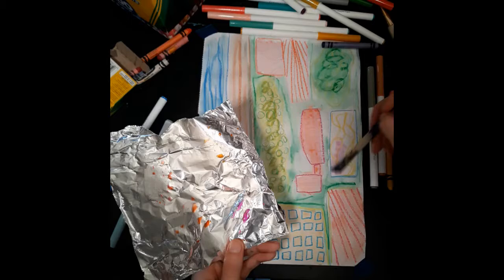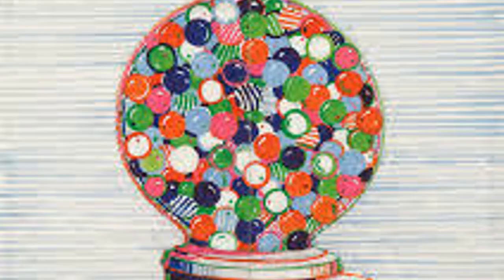After I filled my whole drawing with color, I used a crayon to add tiny details like cars and more trees.